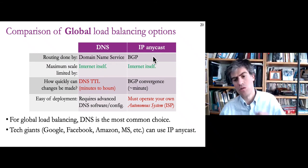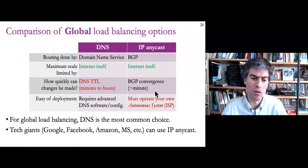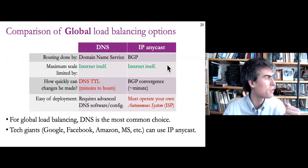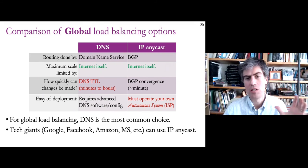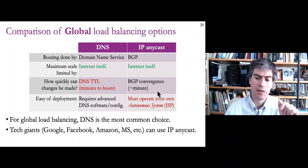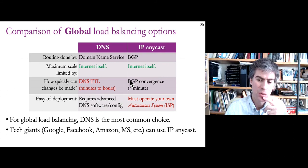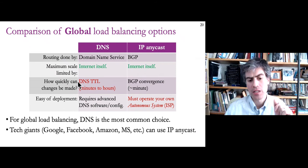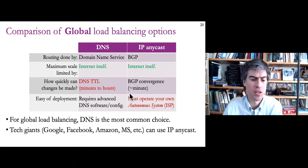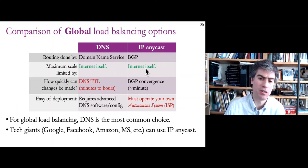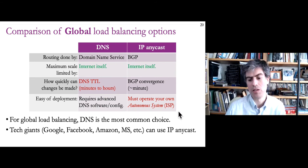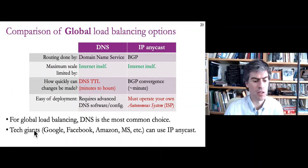IP anycast technically violates the principle that IP addresses correspond to particular network locations, which could cause TCP connections to break. But DNS is UDP-based — everything fits into one packet — so it doesn't matter if messages go to different locations. IP anycast is better than DNS in some sense because there's less caching, so changes can be made more quickly. DNS answers can be stale for minutes or hours. However, to use IP anycast with BGP for load balancing, you need to operate your own autonomous system — essentially you need to be an internet service provider or a huge tech company.